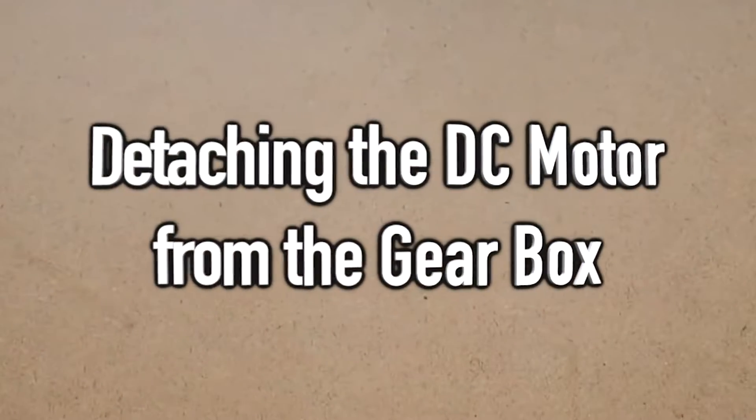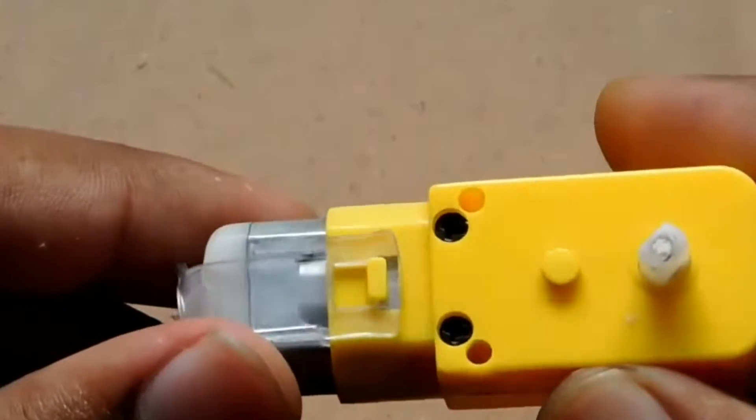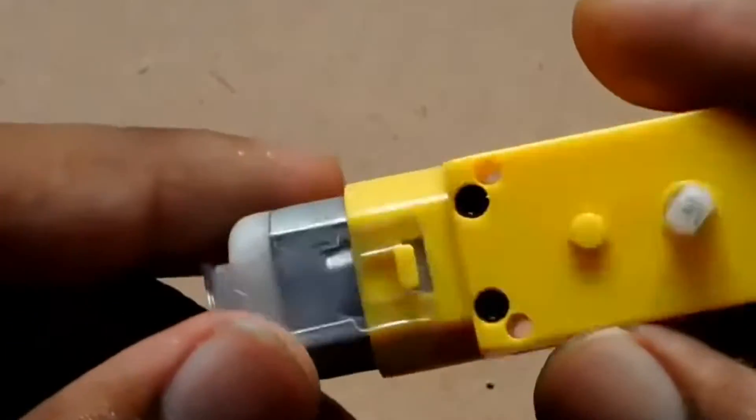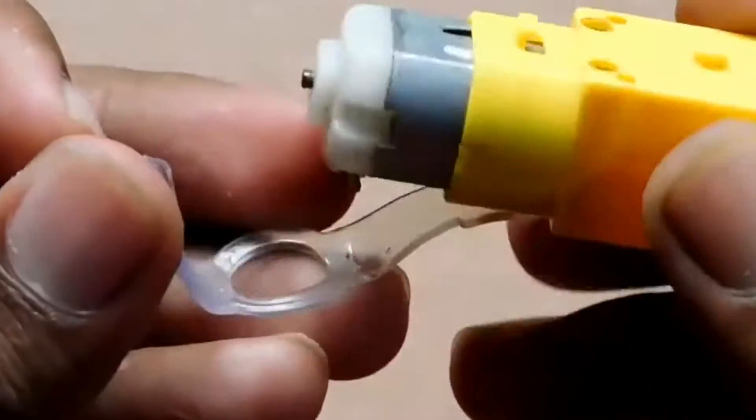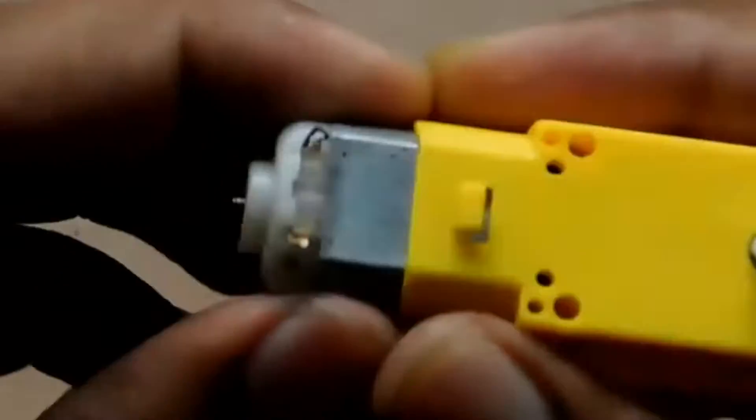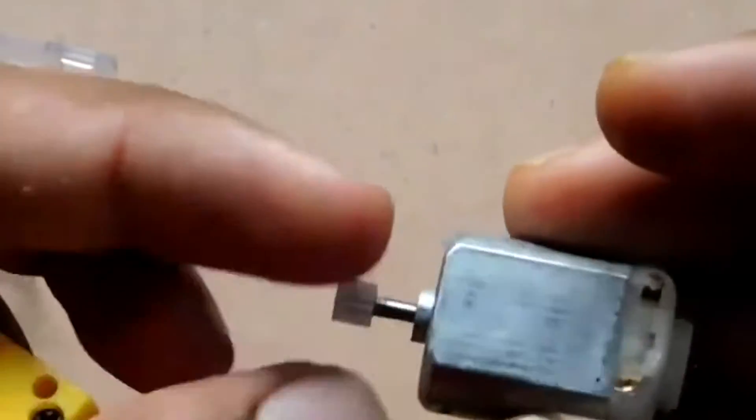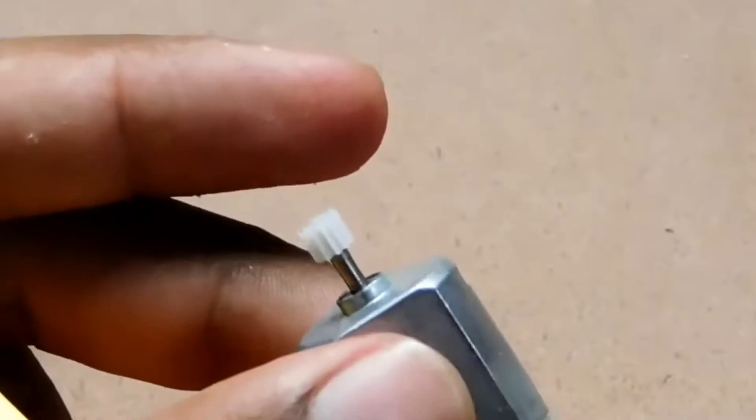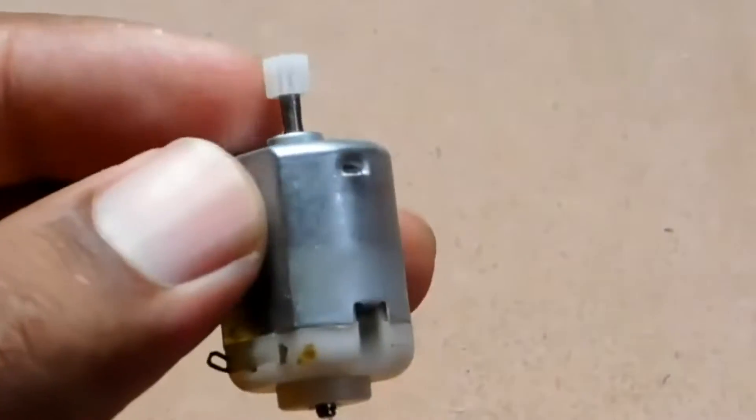We will now detach the DC motor from the gearbox to show you again what's inside a geared motor. As you can see, the modules are divided into two: a DC motor and a gearbox.